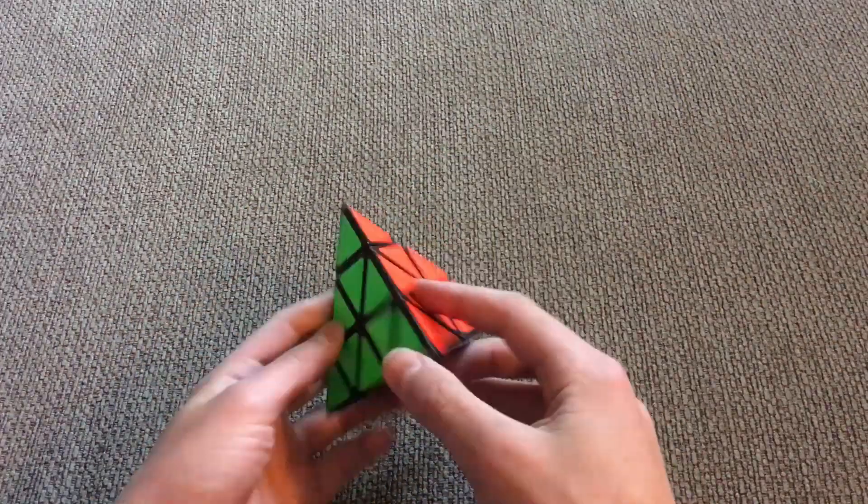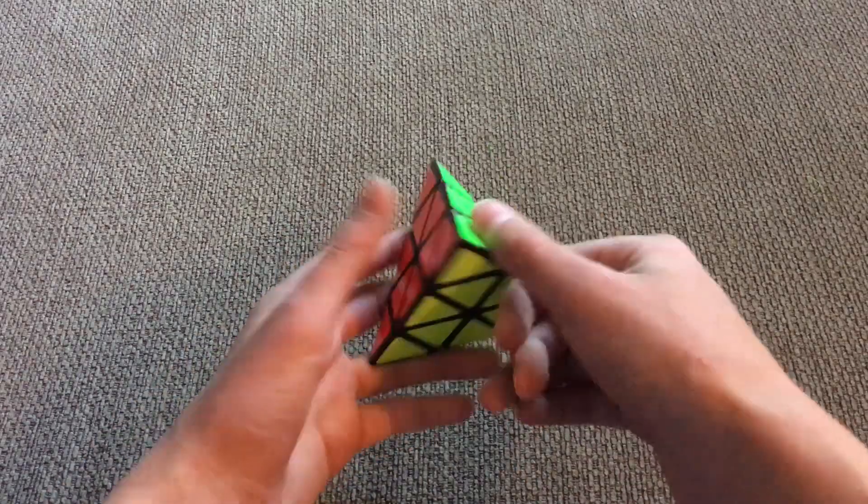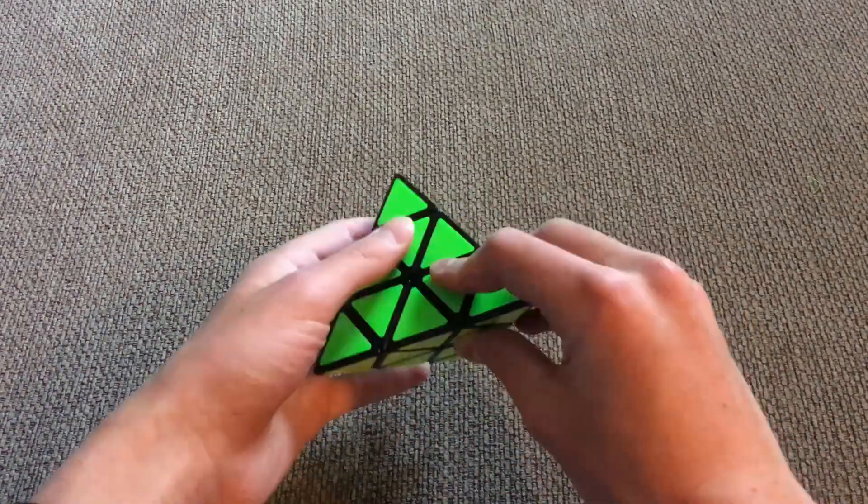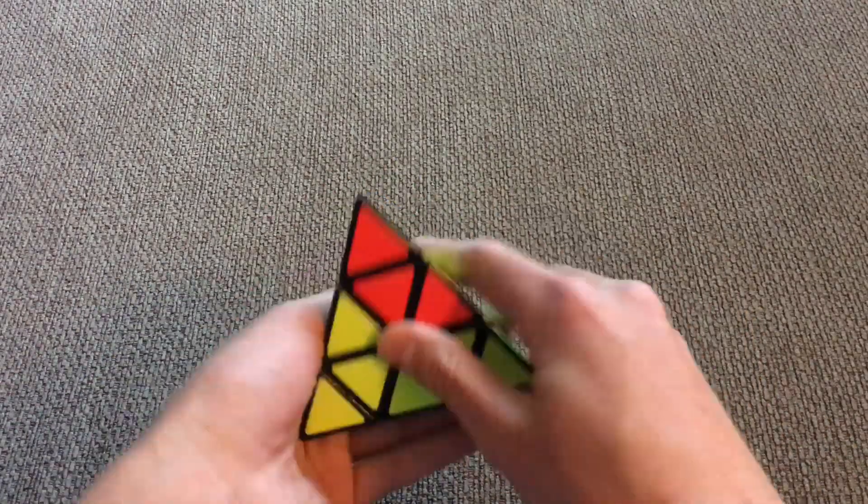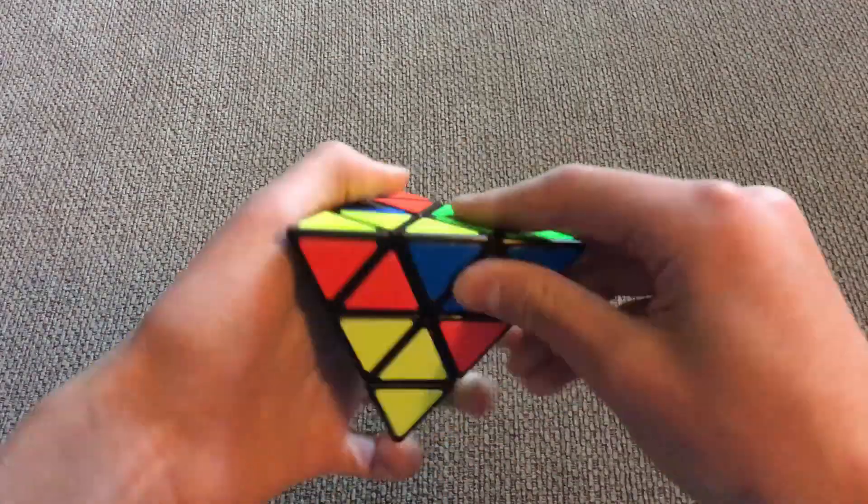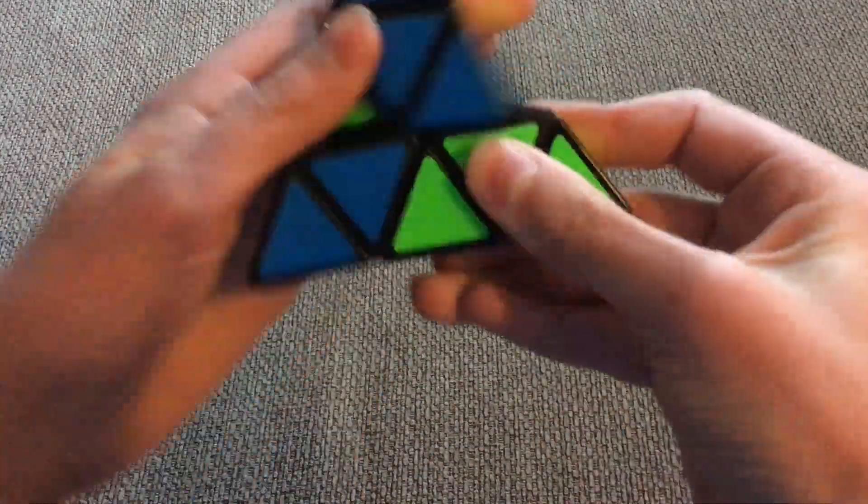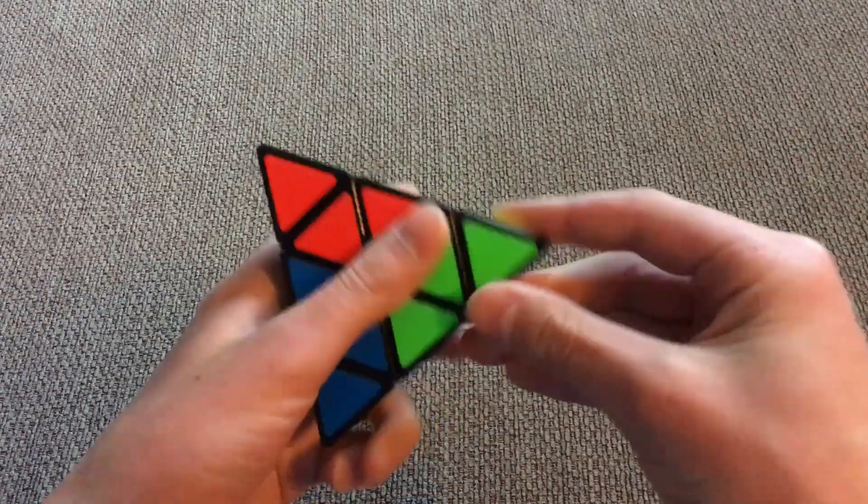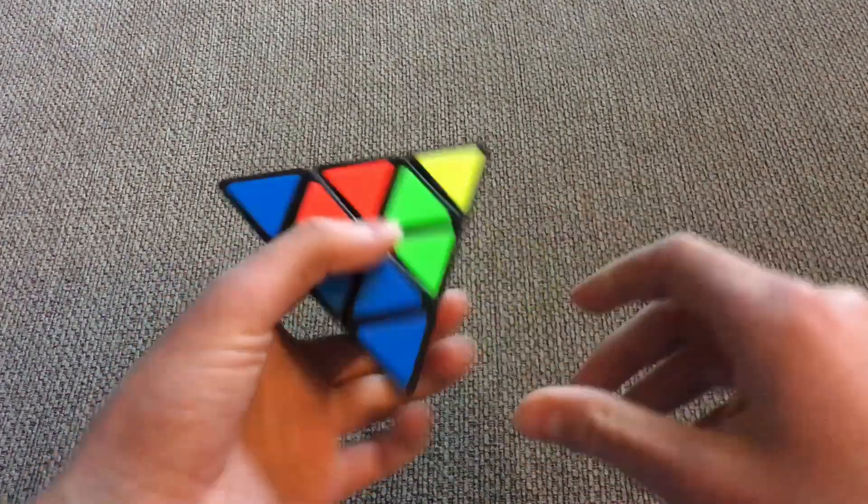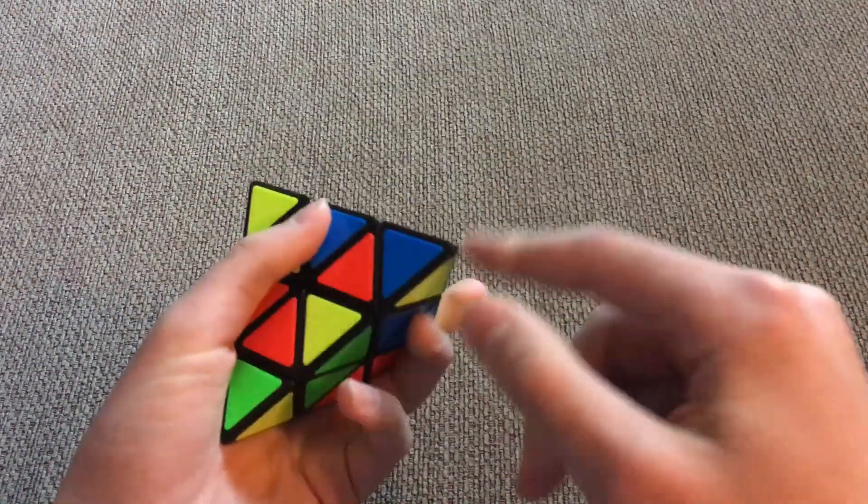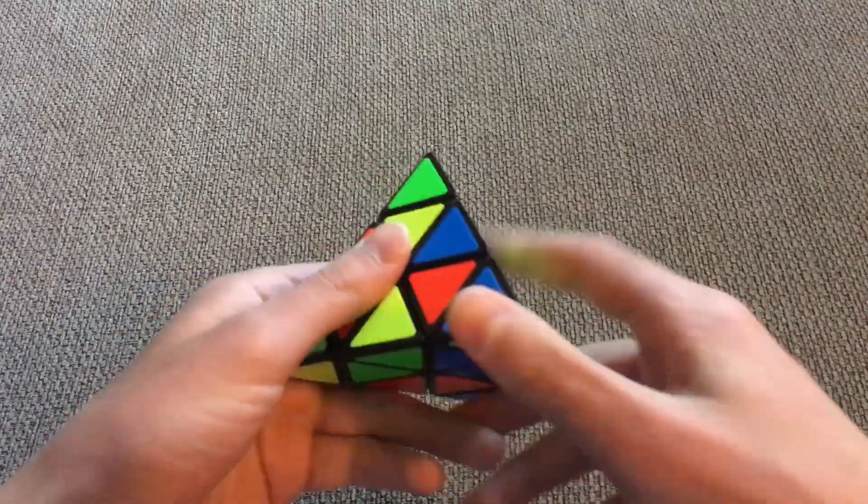Now, the first step in solving the Pyraminx is actually to scramble it. So, if yours isn't scrambled already, you should do that now. And don't forget to turn these tip parts so they're unscrambled as well.